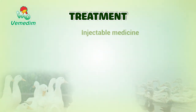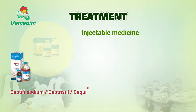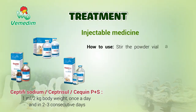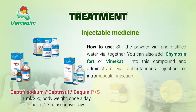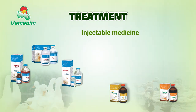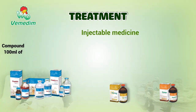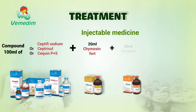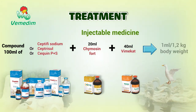Trị bệnh bằng một trong các loại thuốc sau — thuốc tiêm: Sử dụng septic sodium hoặc septicul hoặc seguin B+. 1ml cho 2 ký thể trọng, ngày một lần, tiêm liên tiếp 2-3 ngày. Dùng lọ bột pha vào lọ nước. Có thể pha thêm chimucin 4 hoặc phimicat để tiêm dưới da hoặc tiêm bắp. Công thức pha gợi ý: 100ml septic sodium (hoặc septicul hoặc seguin B+) cộng với 20ml chimucin 4 loại tiêm, cộng với 40ml phimicat. Hỗn hợp sau khi pha sử dụng cho vịt 1ml cho 1,2 ký thể trọng.